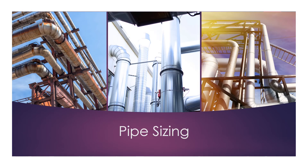Pipe sizing is one of the first major activities a process engineer shall carry out during the preparation of P&ID drawings. Pipe size is an important factor for a well-designed process. It shall affect fluid velocity, pressure drop, flow regime, etc. A poorly sized pipe can cause disturbance to the whole process and may lead to plant shutdown in critical cases.